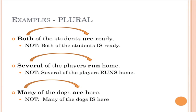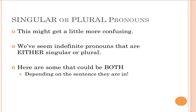Here are some examples using plural indefinite pronouns. 'Both of the students are ready.' The subject is 'both,' it's plural, so the verb it must agree with is 'are.' You cannot say 'both is ready' because 'is' is singular. 'Several of the players run home' — you can't say 'runs.' Several is plural, 'run' is plural. And 'many of the dogs are here' — subject is 'many,' verb is 'are.'